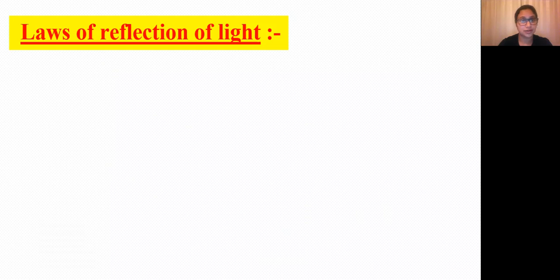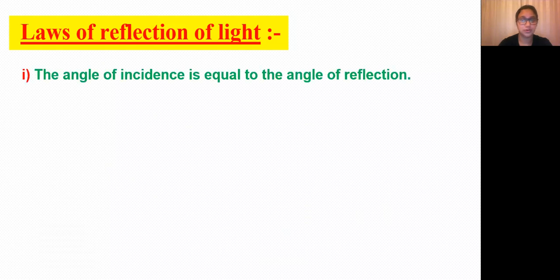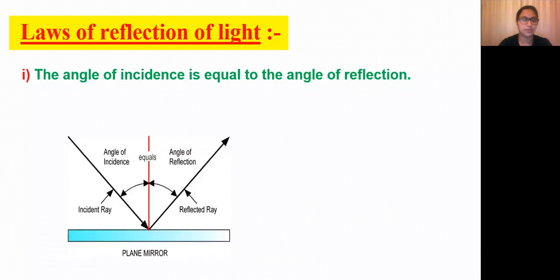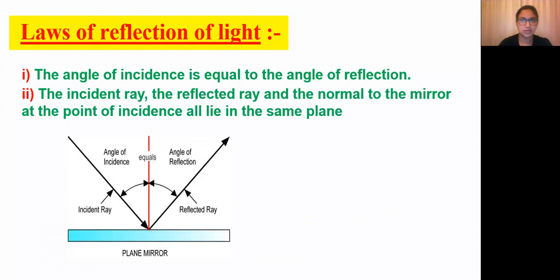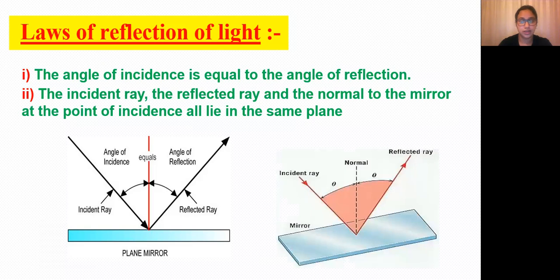After understanding reflection, you must also know its two important laws. The first law: the angle of incidence is equal to the angle of reflection. The second law: the incident ray, the reflected ray, and the normal must all lie in the same plane.